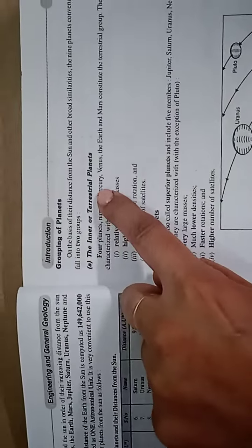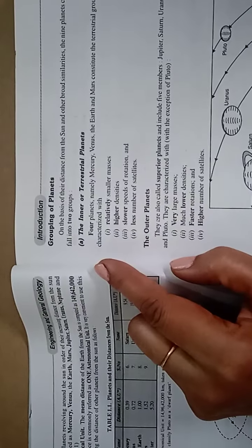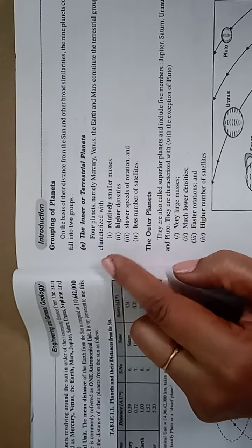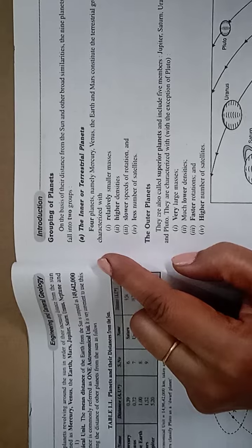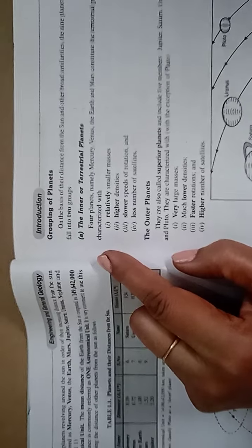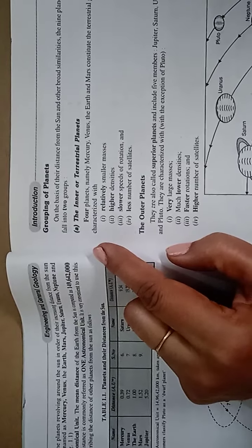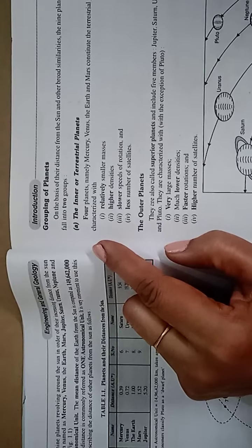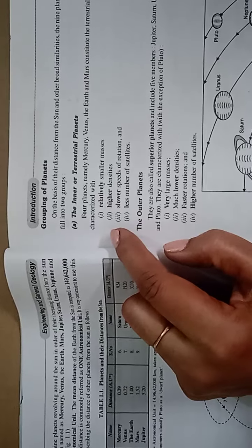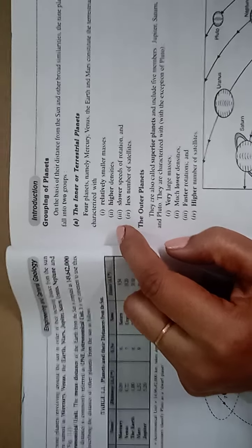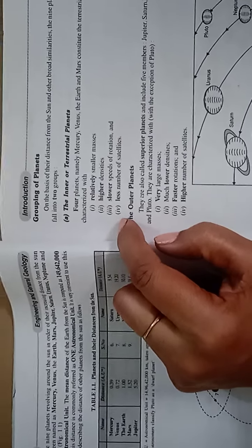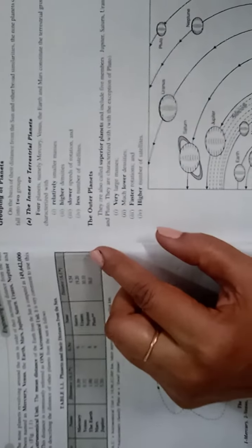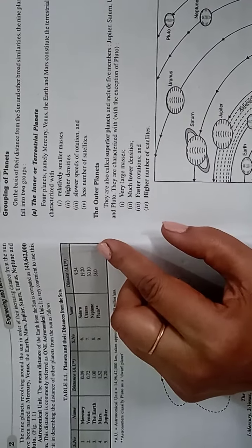The inner or terrestrial planets: four planets — namely Mercury, Venus, the Earth and Mars — constitute the terrestrial group. They are characterized by relatively smaller masses, higher densities, slower speeds of rotation, and a lesser number of satellites.